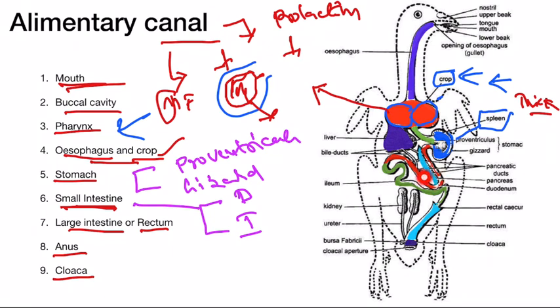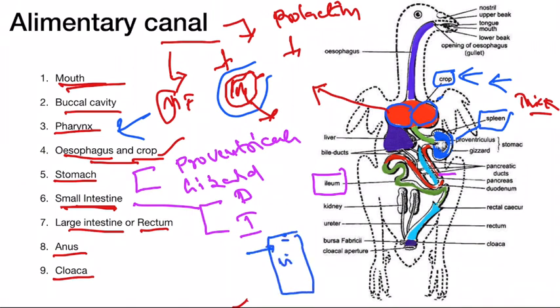The small intestine is a very long coiled tube with two parts: the duodenum and ileum. The duodenum forms a U-shaped structure inside which the pancreas is present. The internal structure of the duodenum has villi, mucous foldings, crypts of Lieberkühn, and goblet cells.